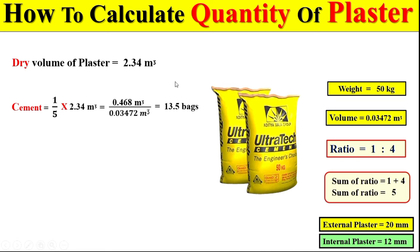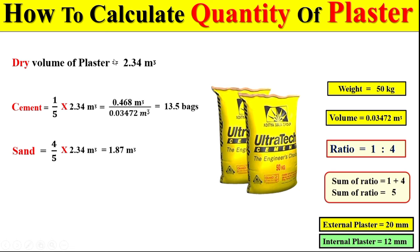To calculate the total quantity of sand in this volume: in the total 5 parts, 4 parts represent the total quantity of sand. If we multiply the dry volume by 4 over 5, we get the total quantity of sand in this volume. So this is our today's topic — how to calculate the total quantity of plaster and how we can calculate the total quantity of cement and sand for that plaster.